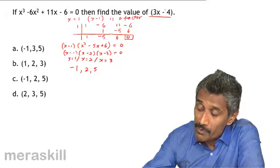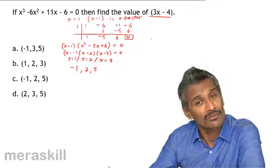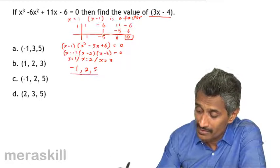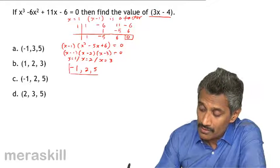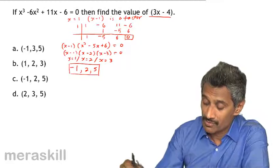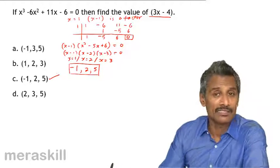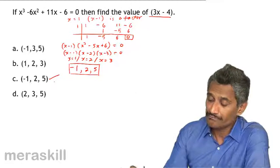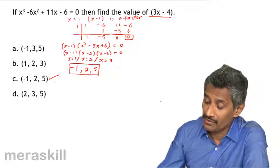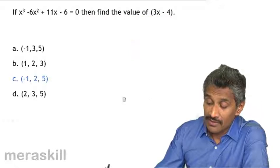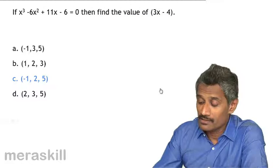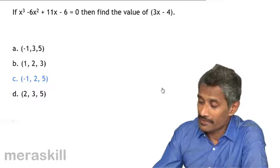Since there are three possible values of x, there are three possible values of 3x - 4: -1, 2, and 5. Checking the options, we do have -1, 2, and 5 as the correct answer.